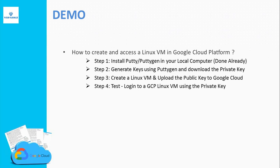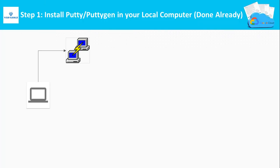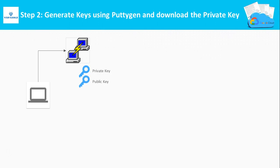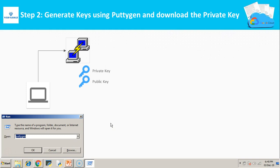Now we will see the demo on how to create and access a Linux VM in Google Cloud Platform using SSH keys. Step one: install PuTTY or PuTTYgen on your local computer. This step is already done — the installation of PuTTY and PuTTYgen is already complete. Now in step two, we are going to generate keys using PuTTYgen and download the private key. Just open your PuTTYgen software.